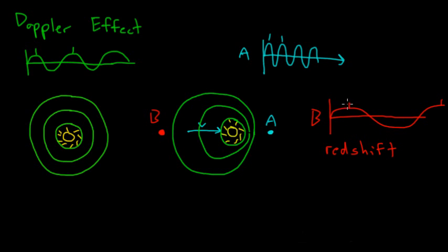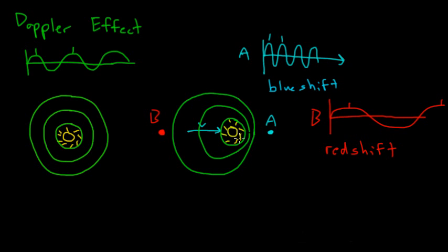Redshifts can be so extreme that the waves are stretched past the red part of the spectrum into even longer wavelength regions like infrared, microwave, or radio — but we call all of this redshift. Conversely, when the source moves toward us and the waves are compressed into shorter wavelengths, we call this blueshift. In extreme cases, blueshift pushes light past the blue into ultraviolet, X-ray, and even gamma ray — the very short wavelength parts of the spectrum.